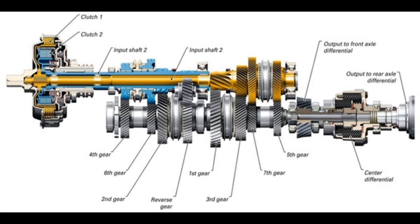A gearbox consists of a set of gears — spur, helical, bevel, worm, and epicyclic — depending on the type of gearbox used, which are arranged in a special fashion in order to provide required gear or speed ratios to the final drive of the vehicle. A gearbox usually comes with the specification of a 5-speed transmission with a reverse and an automatic transmission.